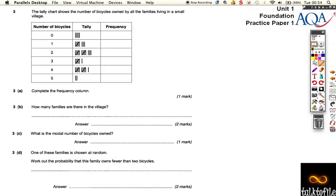We're still on the foundation paper, we're looking at question 3 now. So we've got a tally chart going here, and it's the number of bicycles owned by the families living in a small village. So calculate the frequency column, well we've just got to add up the tally, so that's 4,